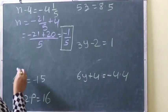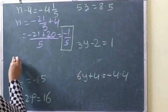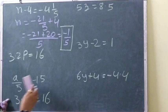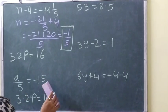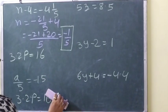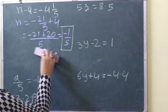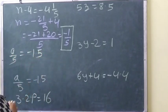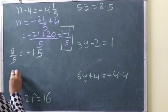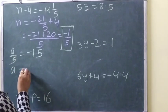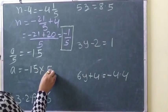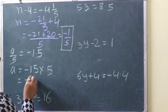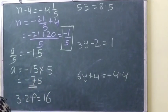For a by 5 equals minus 15: a equals minus 15 multiplied by 5. Division becomes multiplication by transposition. So the answer is minus 75. For 5z equals 8.5: z equals 8.5 divided by 5, which gives 1.7.